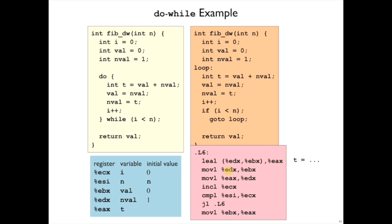Then we move EDX to EBX, that is moving nval to val, just like we had in the C code. And then we're moving EAX to EDX, that's t to nval, just like in the C code.